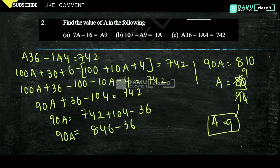You can check: 936 minus 194 equals 742. So we get 742 — confirmed.